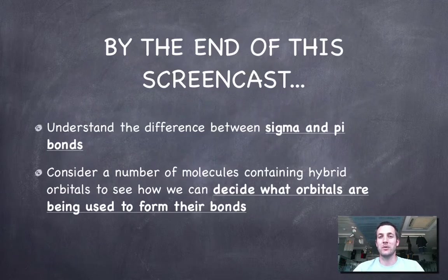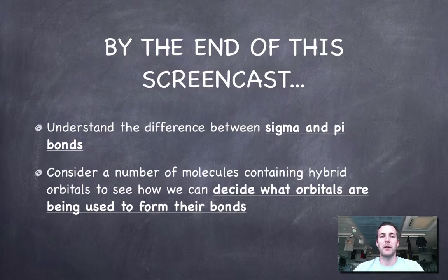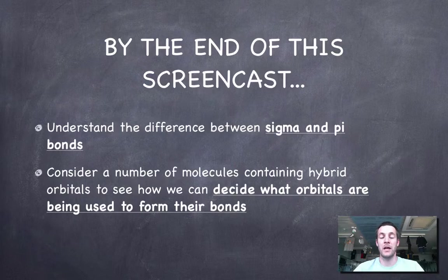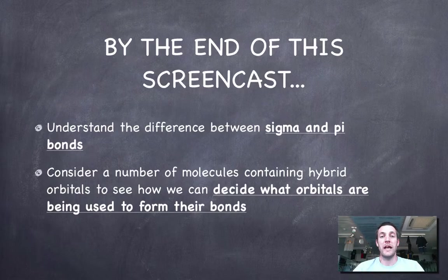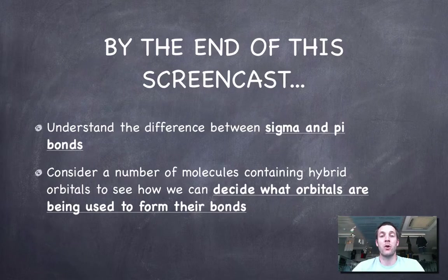It's quite an in-depth film with a few examples to get through. By the end of this film, you'll understand the difference between a sigma and a pi bond, and you'll have looked at a few molecules that contain hybrid orbitals. You'll see how we answer an exam question about what type of orbitals are being used to make the bonds and what type of bonds we have.